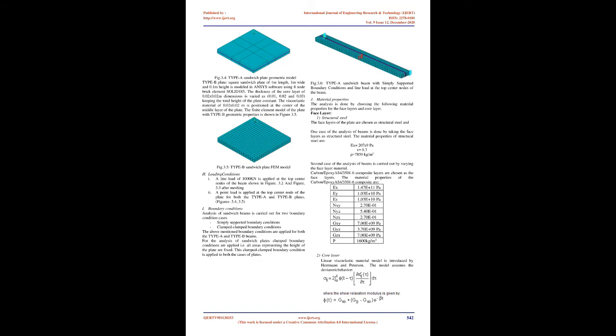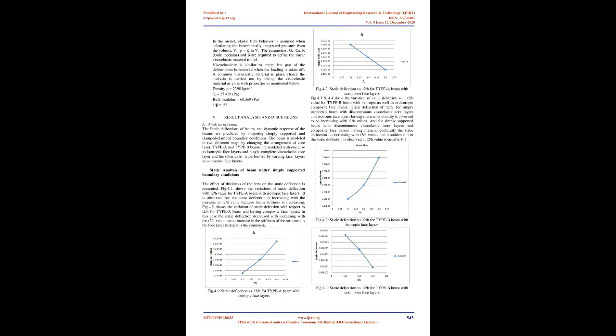Solid 185 Structural Solid is suitable for modeling general 3D solid structures. It allows for prism and tetrahedral degenerations when used in irregular regions. Various element technologies such as B-bar, uniformly reduced integration, and enhanced strains are supported. Two different arrangements are modeled: Type A beam (complete viscoelastic core layer), Type B beam (beam having material continuity of face layers), Type A plate (core layer is viscoelastic with 0.02 × 0.02 m slot at center, top/bottom faces and slot are structural steel), and Type B plate (viscoelastic material of 0.02 × 0.02 m positioned at the center of the middle layer).